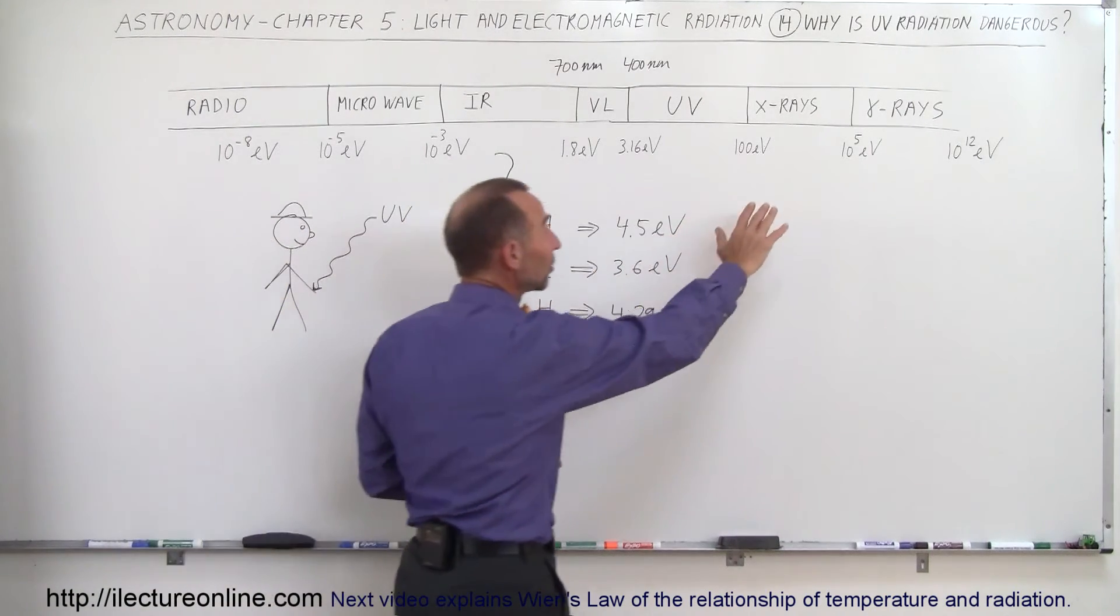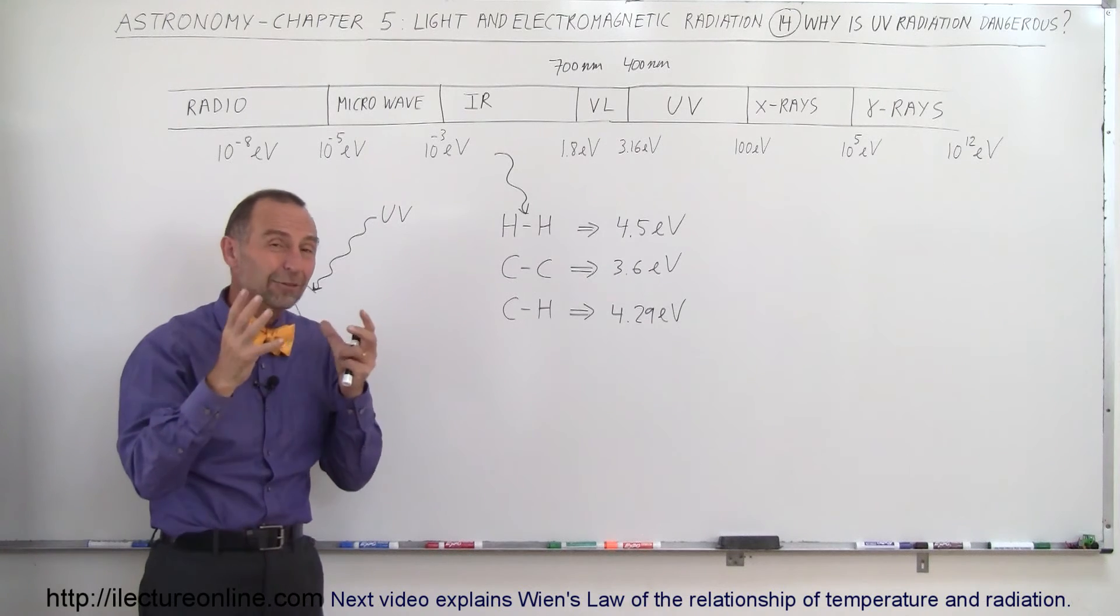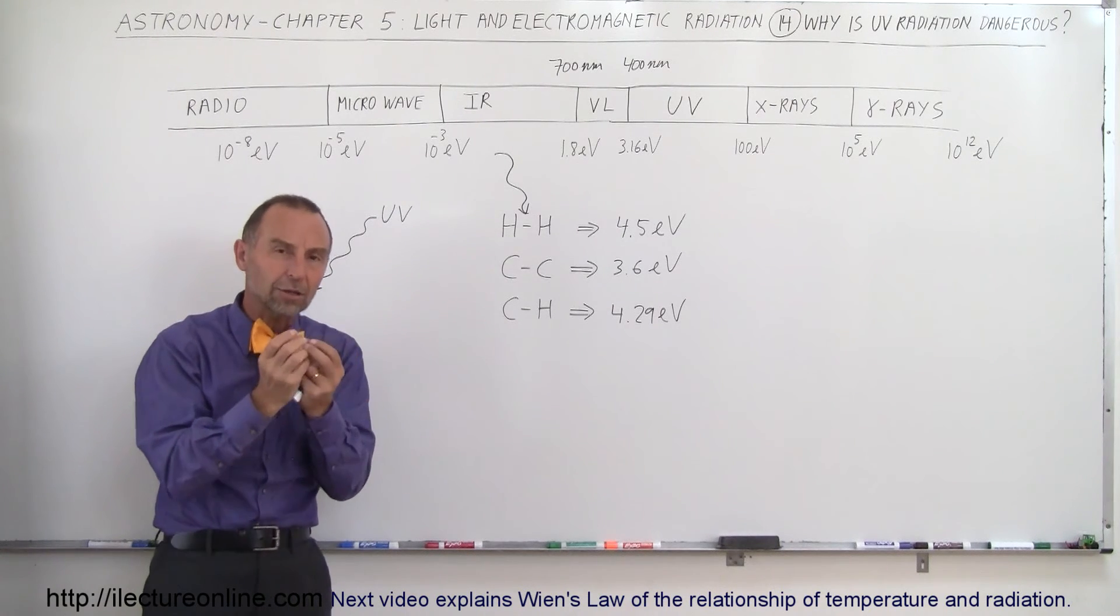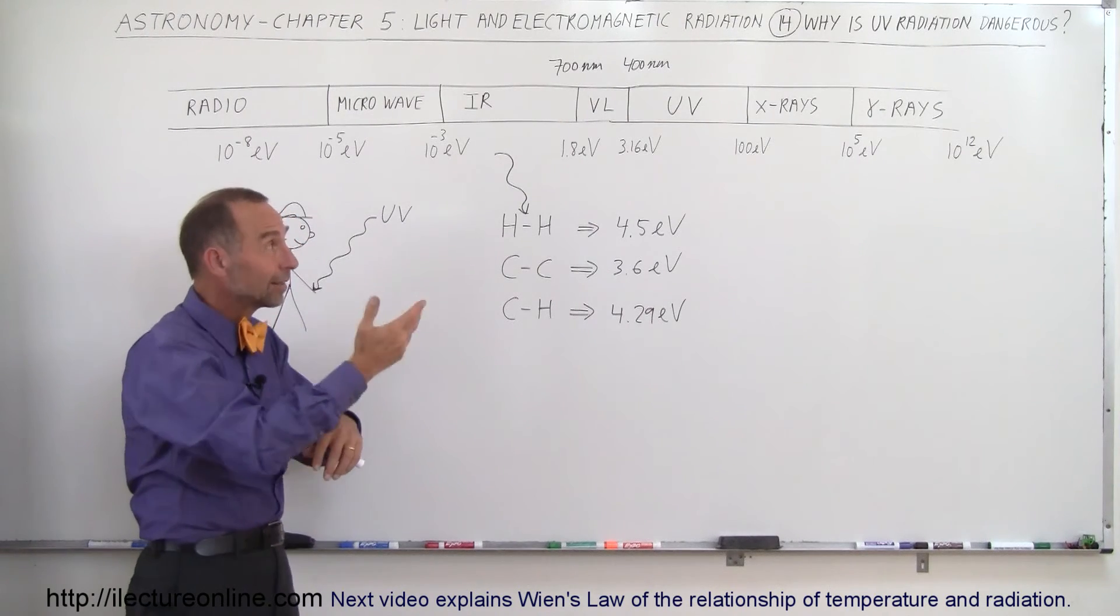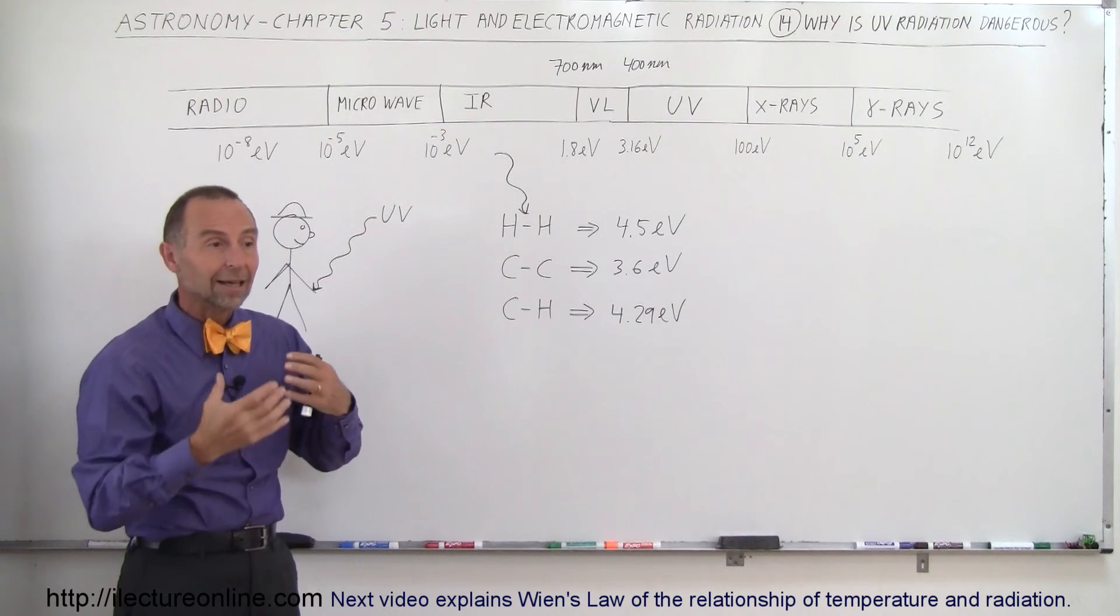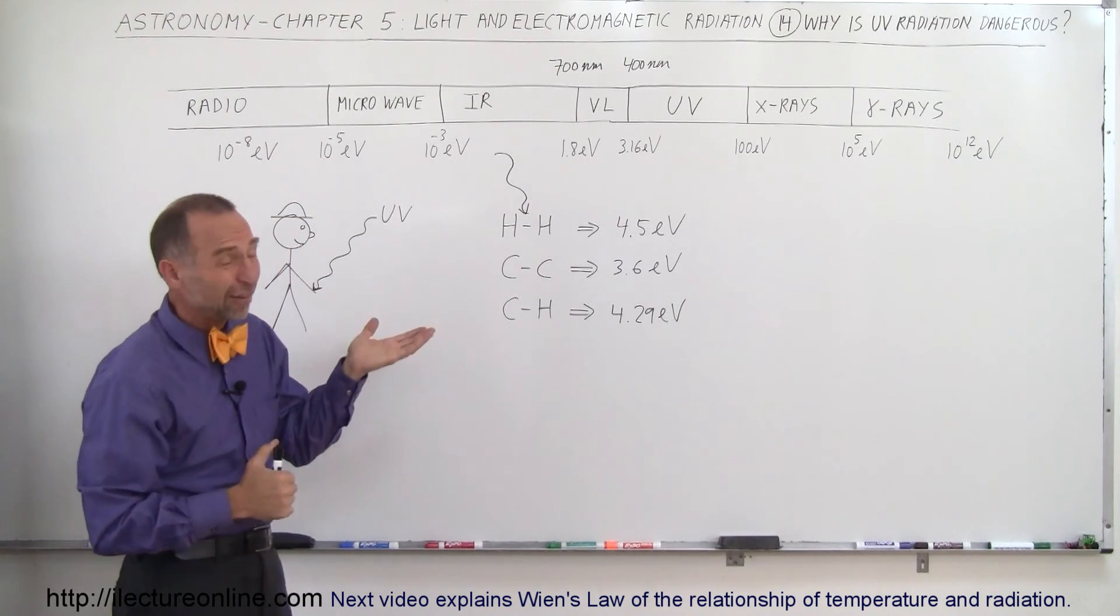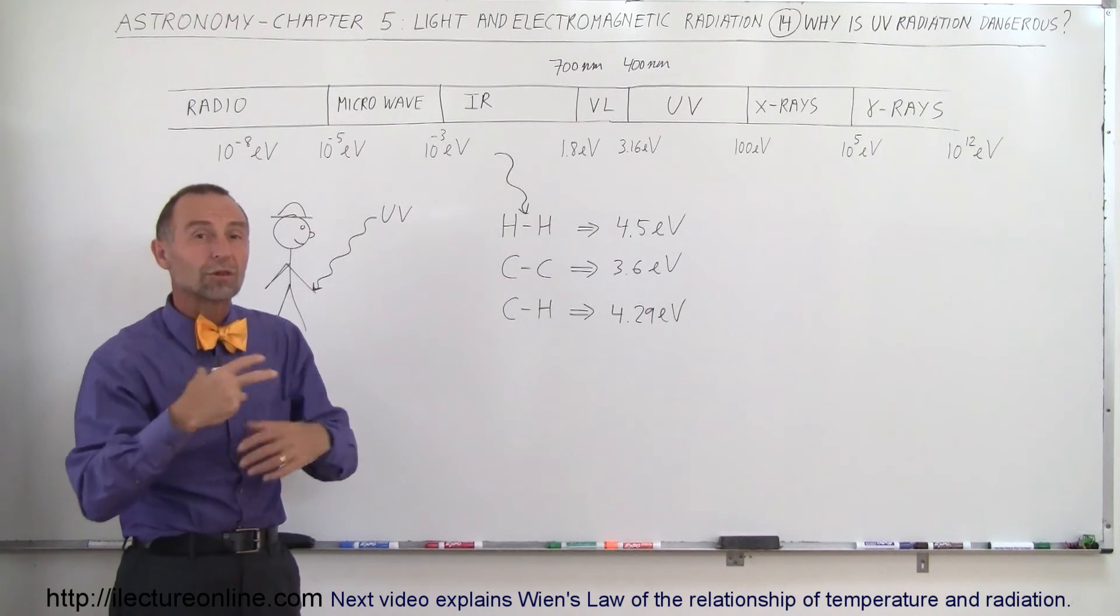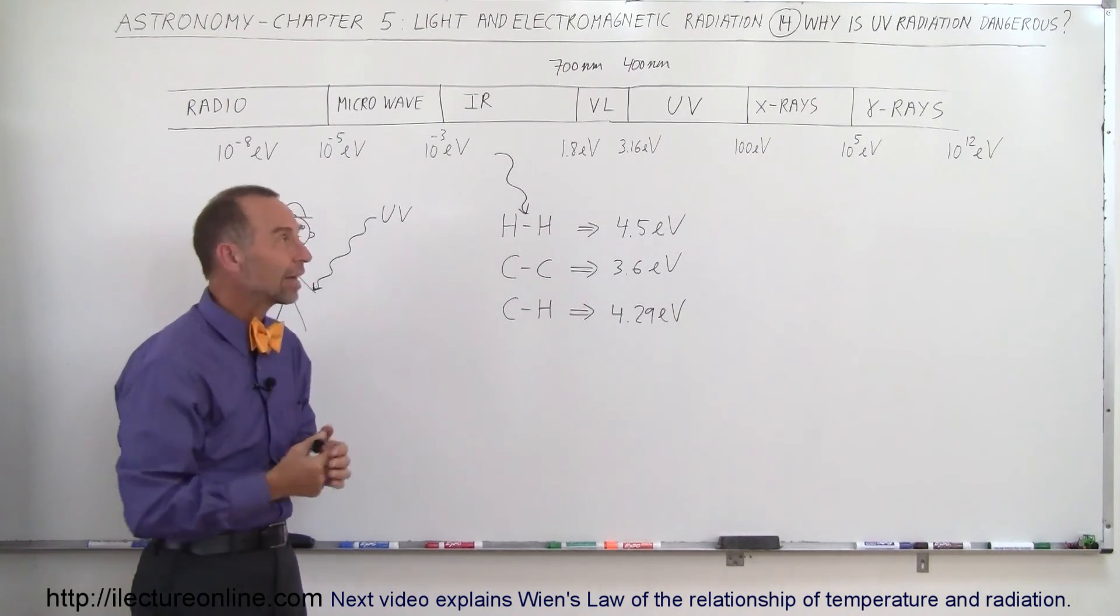Now, of course, with x-rays and gamma rays, that's a whole different story. Those photons have so much energy. Think of them, again, like photons are like particles. And if those particles have enough energy, they will actually go through the skin. And in the case of x-rays and gamma rays, all the way through the body and out the other side, it's almost like a little bullet going through your body. And in the case of x-rays, only the dense bones of the skeleton can hold back the penetration of the x-rays.